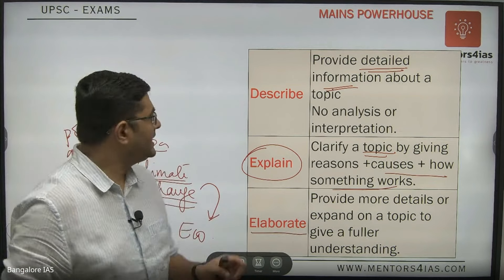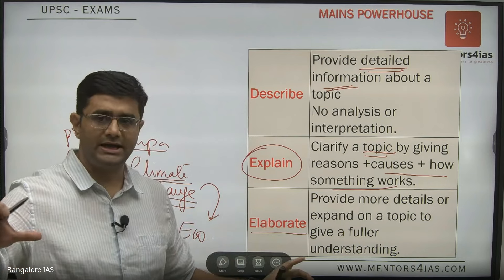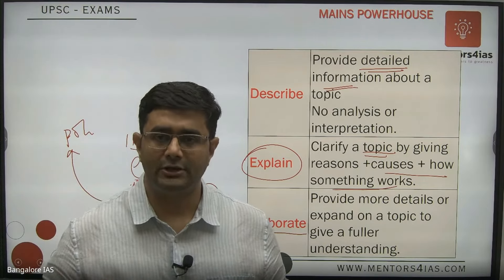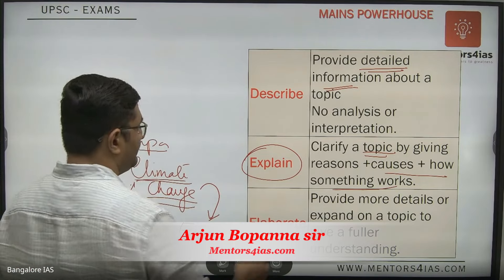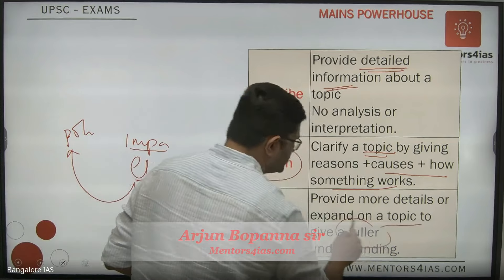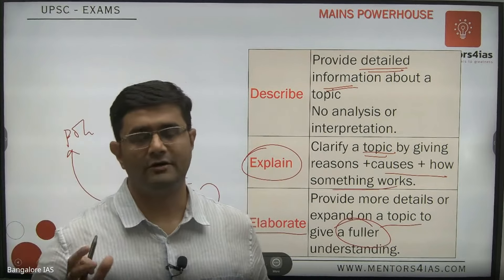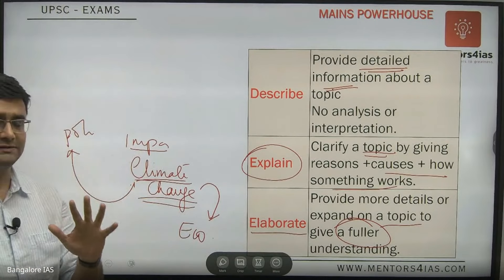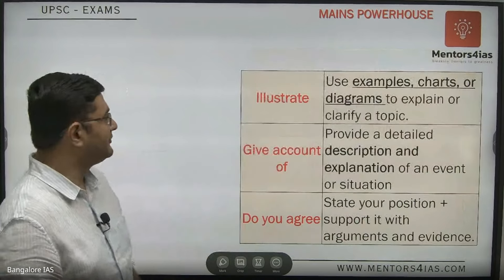'Elaborate' is description or explanation but in much more detail. When you elaborate on a topic like climate change, you provide more detail and explain further about that particular topic so as to help the examiner get a comprehensive understanding. You can see how things change with the keywords — the same topic of climate change is treated differently each time.